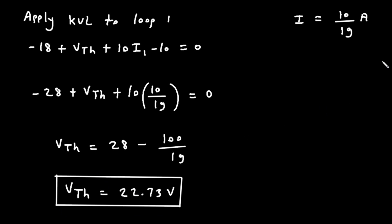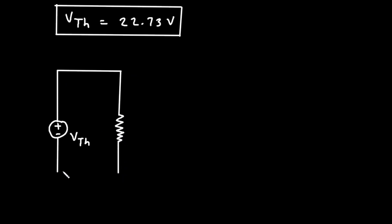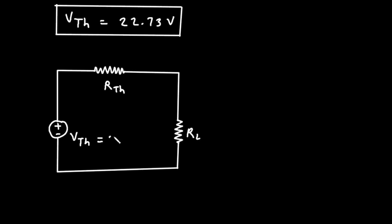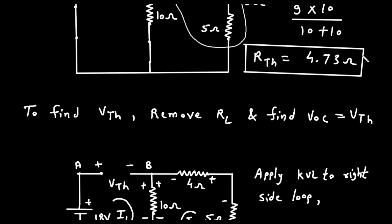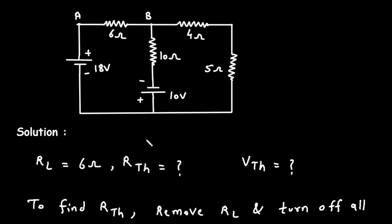Now we have the value of VTH and RTH. We will make the Thevenin equivalent circuit: VTH is in series with RTH and RL. The value of VTH is 22.73 Volt, the value of RTH is 4.73 Ohm, and the value of RL is 6 Ohm.